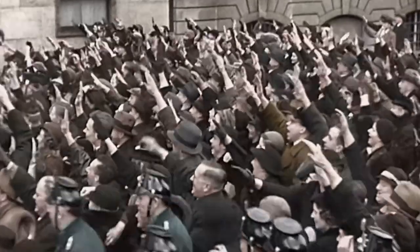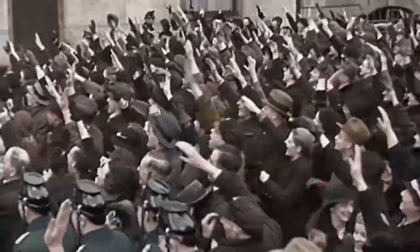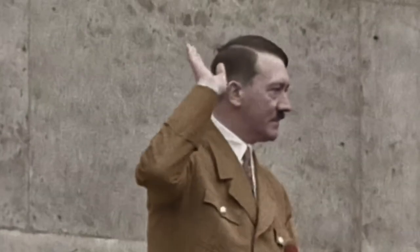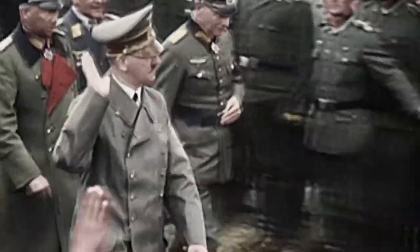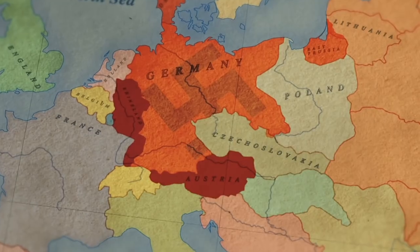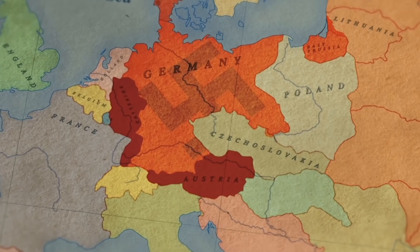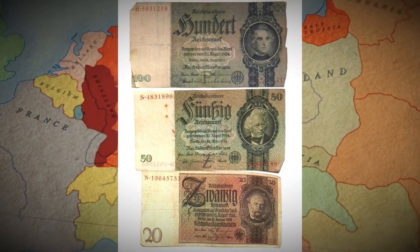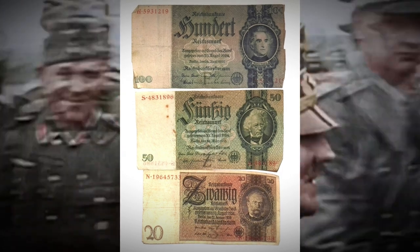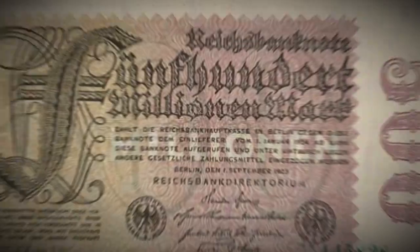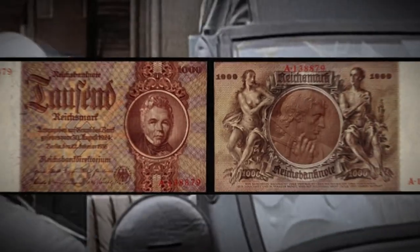Once the Nazis gained power in Germany, the use of money — specifically paper money — changed. The Reichsbank had to change the designs on the banknotes, adding Hitler's images and other Nazi symbols. Banknotes bearing past German leaders, such as Paul von Hindenburg, were replaced with new notes featuring Hitler. In 1933, a new Reichsmark banknote was introduced in denominations of 100, 500, and 1,000 Reichsmarks.